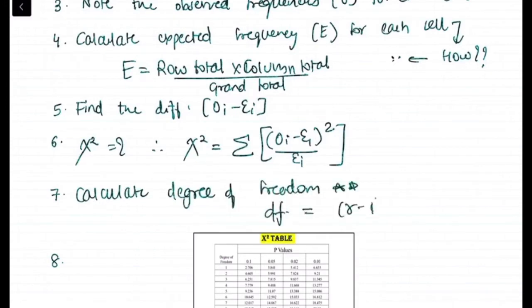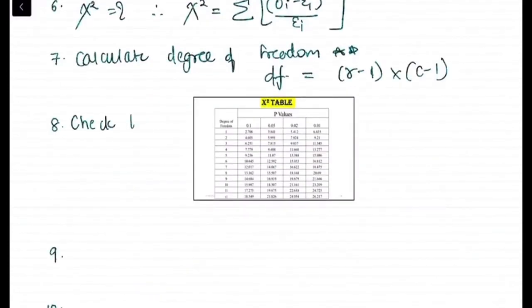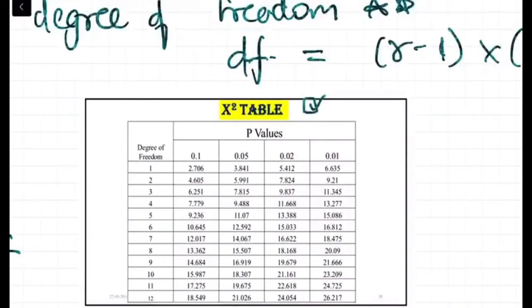Now calculating the degree of freedom is the seventh step. Degree of freedom is equal to row minus one into column minus one. And eighth is checking the chi-square value in the chi-square table as per the degree of freedom.